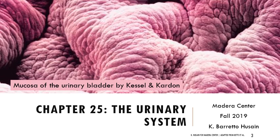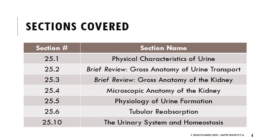We're going to start with Chapter 25. We'll talk briefly about physical characteristics of urine, get into a brief review of gross anatomy of the urinary system, specifically focusing on the kidneys, then get into microscopic anatomy of the kidneys — going more in-depth than you probably covered in anatomy — and then really get into the physiology of urine formation, tubular reabsorption, and the urinary system and homeostasis. Sections 7 through 9 are touched on throughout different parts of this lecture, worked into other sections.